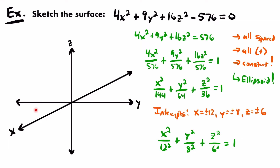Now let's plot those intercepts in this coordinate system. This only works because this ellipsoid is centered at the origin — we just have x², y², and z² in the equation, not x minus 1 squared or y plus 2 squared. There are no extra values being added or subtracted from x, y, and z in those squared quantities, which means the ellipsoid is centered at the origin. That will be the case for the majority of quadric surfaces you are expected to sketch.